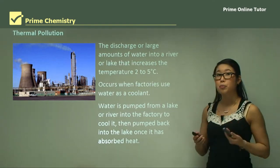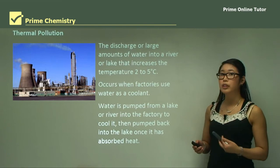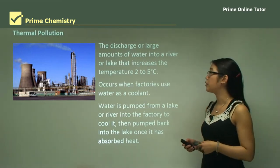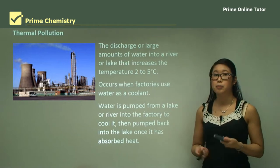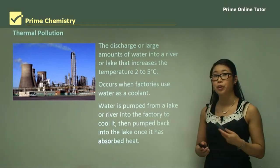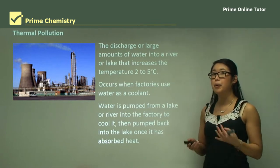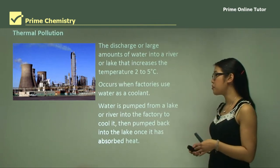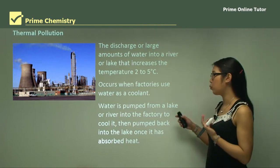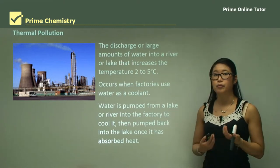However, there's also thermal pollution. The discharge of a large amount of water into a river or lake that increases the temperature by two to five degrees Celsius is considered to be thermal pollution. This usually occurs when factories use water as a coolant for their machines and then pump that water into a lake or river to get rid of it.